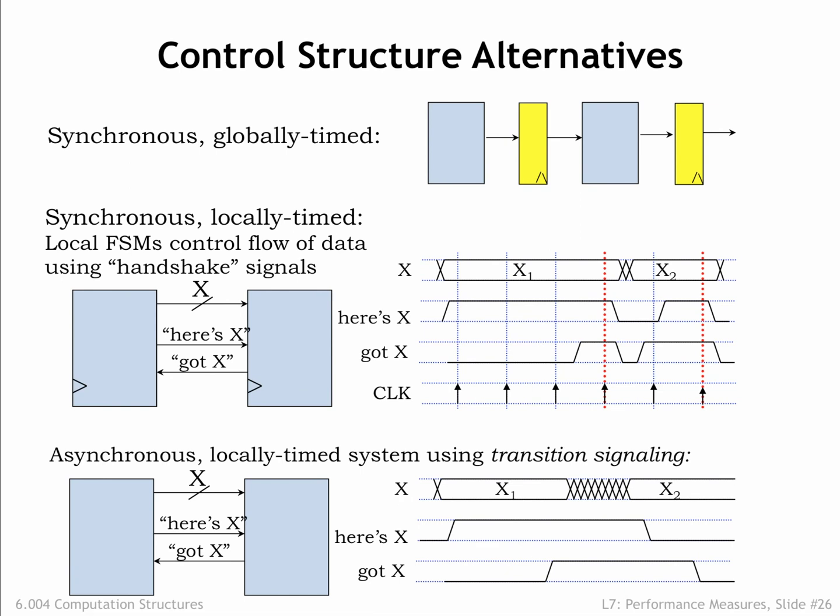It's possible, although considerably more difficult, to build a clock-free asynchronous self-timed system that uses a similar handshake protocol. The handshake involves four phases. In phase 1, when the upstream stage has a new output and got X is deasserted, it asserts its here's X signal and then waits to see the downstream stage's reply on the got X signal.